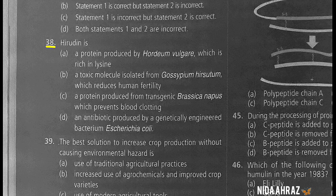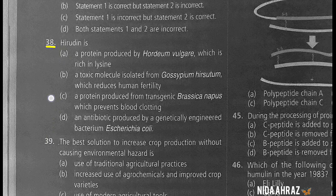Hirudin is a protein produced by Hordeum vulgare which is rich in lysine, a toxic molecule isolated from Gossypium hirsutum which reduces human fertility, a protein produced from transgenic Brassica napus which prevents blood clotting, or an antibiotic produced by genetically engineered E. coli. The correct choice is option C.